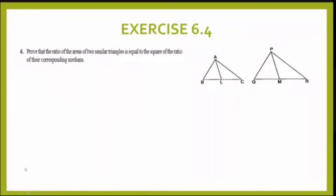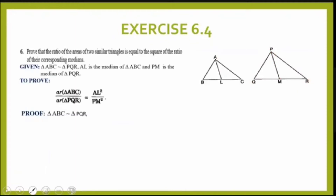Let us take up the sixth question of exercise 6.4: prove that the ratio of the areas of two similar triangles is equal to the square of the ratio of the corresponding medians. We are given two triangles ABC and PQR such that they are similar. I need to prove that area of triangle ABC to area of triangle PQR equals AL squared upon PM squared. Since the triangles are similar, we have angle A = angle P, angle B = angle Q, angle C = angle R, and AB upon PQ equals BC upon QR equals AC upon PR.